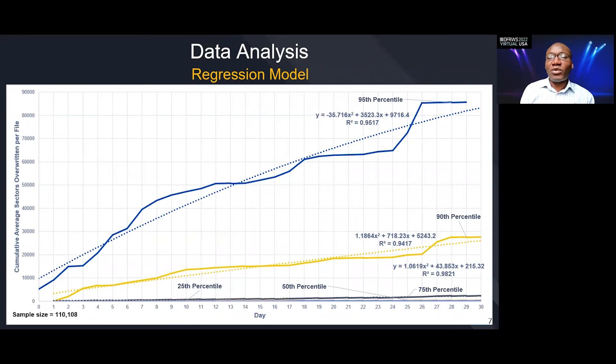The way we use this model is, if a file is deleted and we want to determine what happens to the file after 15 days, we go to the horizontal axis, we go to day 15, we trace it to maybe the 95th percentile curve if we want to determine what happens to 95% of the files after 15 days. Then we trace from the 95th percentile curve to the vertical axis. That tells us how many sectors each file will have lost on the average after 15 days. This model tells us that about 55,000 sectors would have been lost per file. So that tells us that if the file we're investigating has less than 55,000 sectors, then the chances of recovering any fragments is almost non-existent. But if the file has more than 55,000 sectors, then there is a chance that we might recover some fragments.